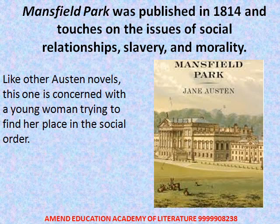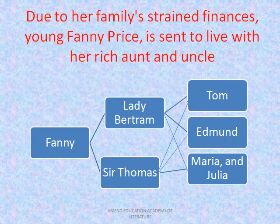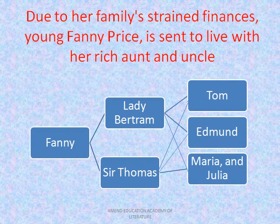The story begins with a young girl, Fanny Price, who is around 9 or 10 years old. Her family's financial condition is poor, and due to the strain of their finances, she is sent to live with her rich aunt and uncle — Aunt Lady Bertram and Uncle Sir Thomas. They also have four children: Tom, Edmund, Maria, and Julia.